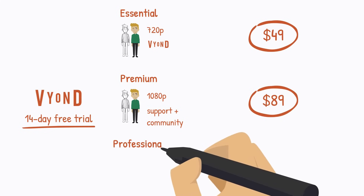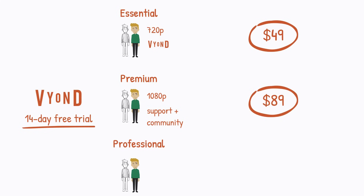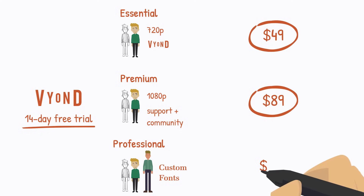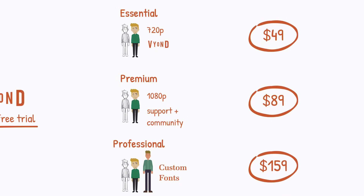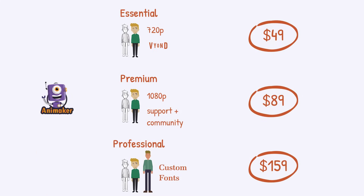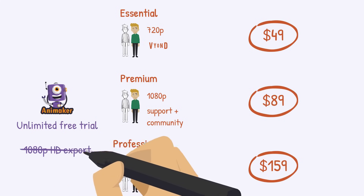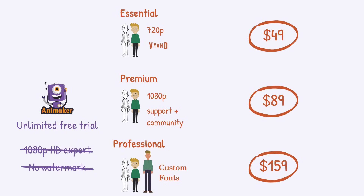The third plan is Professional, which is the one I'm on, because I want to animate in the contemporary style and use custom fonts in my YouTube videos and courses. The Professional plan is $159 a month. Animaker starts off differently with a free trial that lasts forever. There are a lot of things you can do on the free trial, such as export in HD and export without a watermark, so you can get to know Animaker before upgrading.